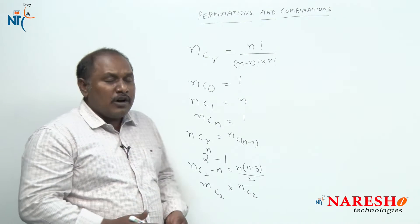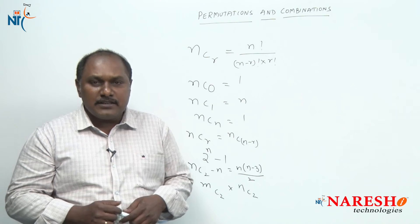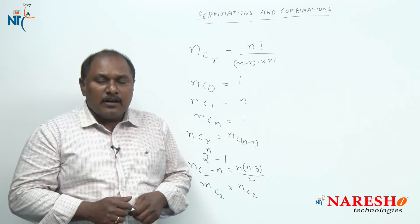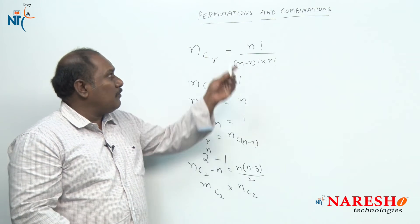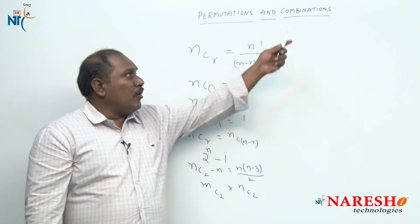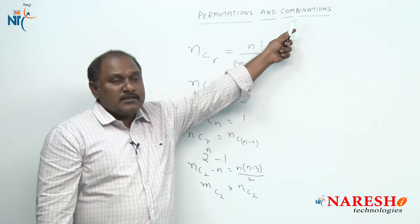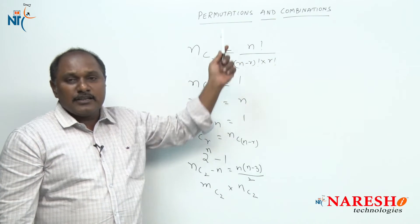This is what we have learned in the previous five sessions. Now today, let us talk about permutations. Combination is selection; permutation is arrangement.